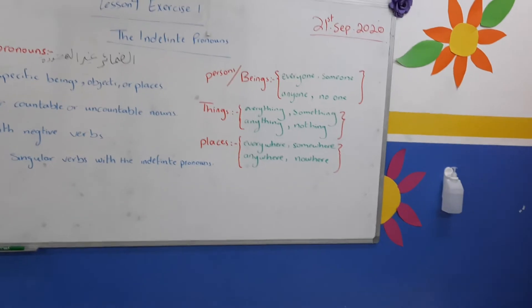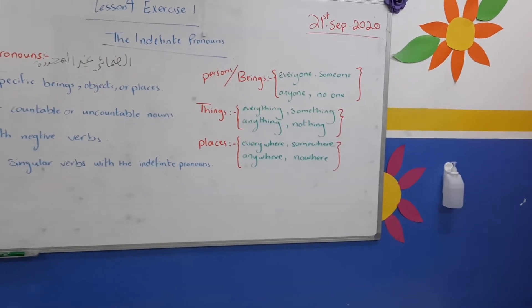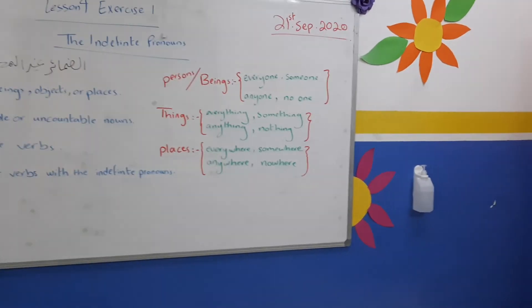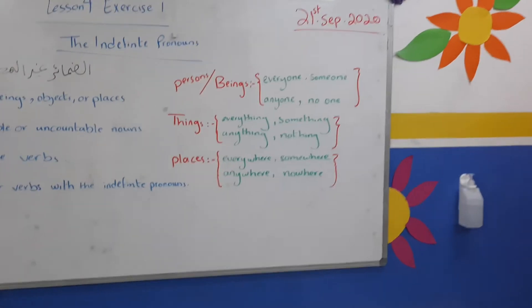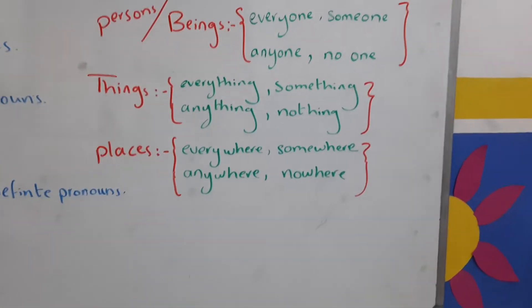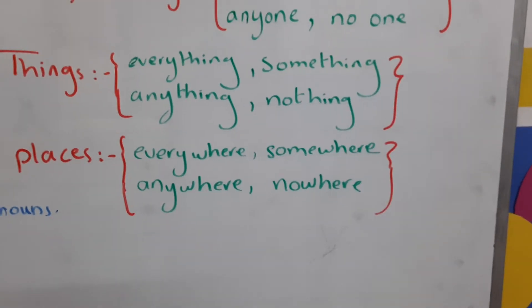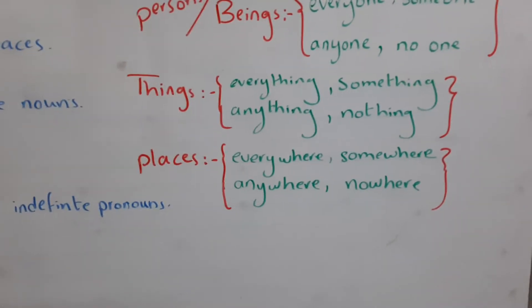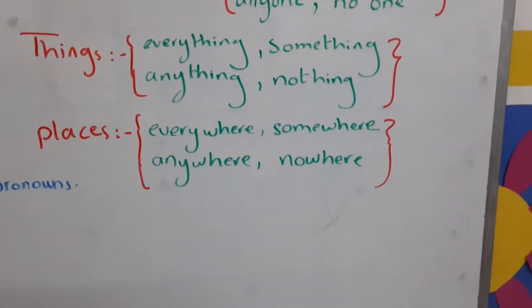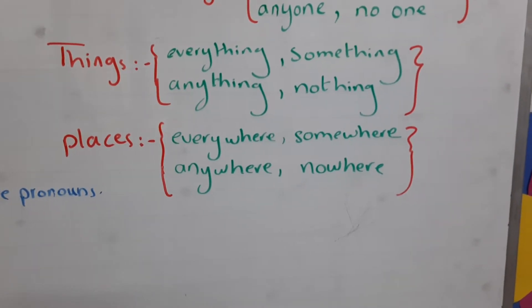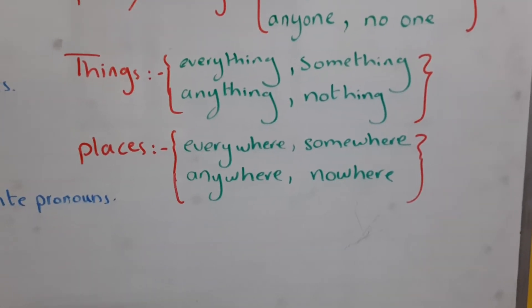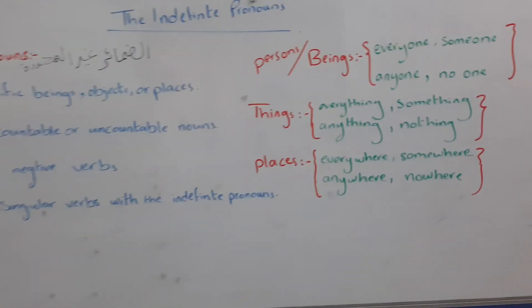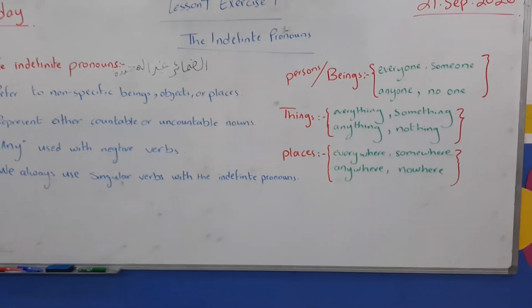The indefinite pronouns for things are: everything, something, anything, and nothing. The indefinite pronouns for places are: everywhere, somewhere, anywhere, and nowhere. Now we will move to the examples.